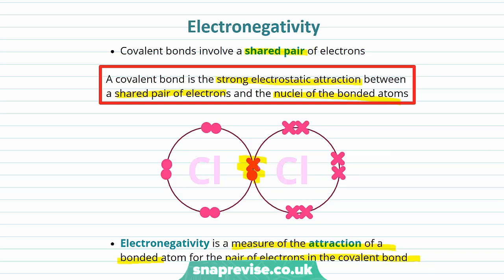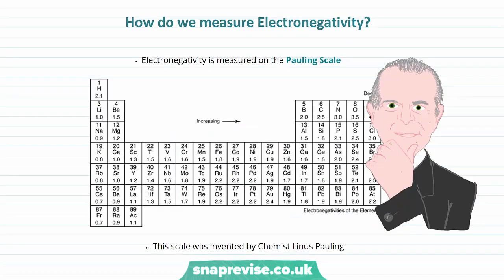How do we measure electronegativity? It's measured using something called the Pauling scale. The scale was invented by a chemist called Linus Pauling, an incredibly important and interesting chemist. Here we have what looks like the periodic table with values on it - these values are our values of electronegativity.